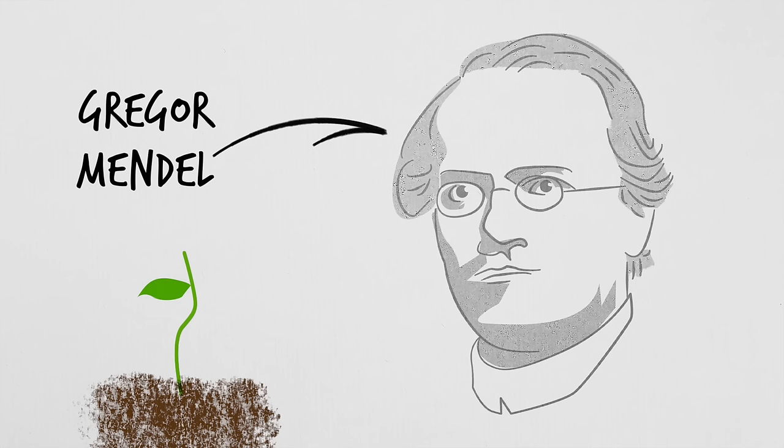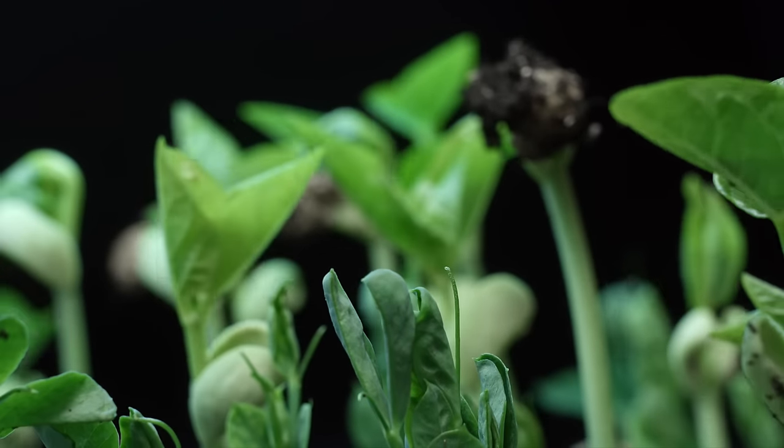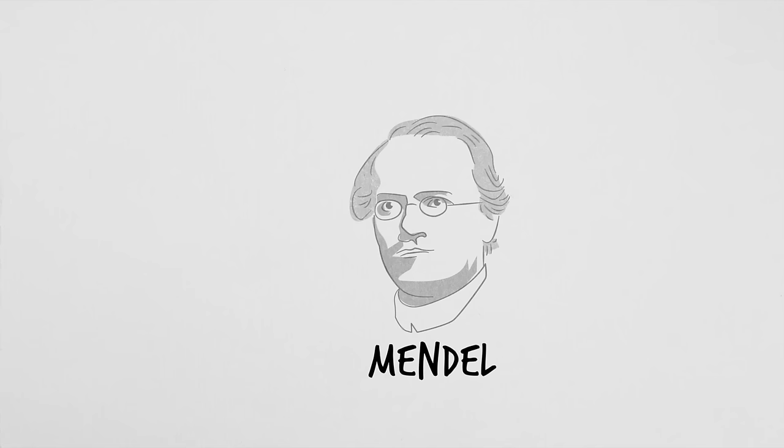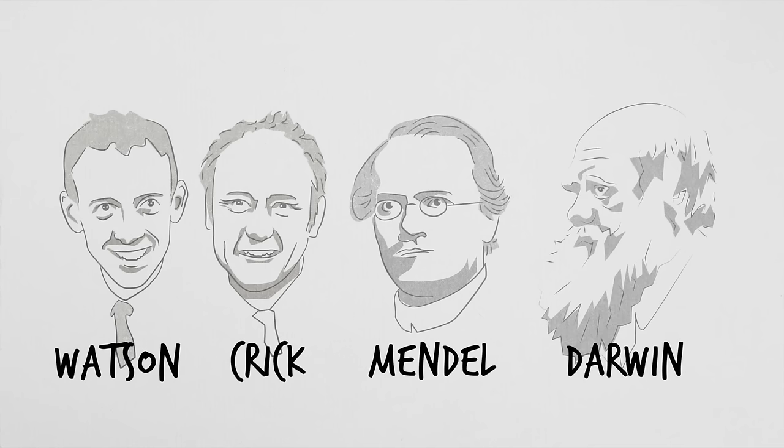Gregor Mendel was an Austrian monk and farmer who had the power of keen observation. While tending the monastery garden in the 1850s, Mendel noticed that certain traits appeared more often than others, while some traits seem to disappear and reappear with time. It's convenient that Mendel experimented with pea plants — they're very small with observable phenotypes, have quick generation times, make tons of offspring, and you can easily control mating through self- and cross-fertilization. For his contributions, Gregor Mendel is regarded as the father of heredity. Other big names include Watson and Crick with DNA, and Darwin with evolution.